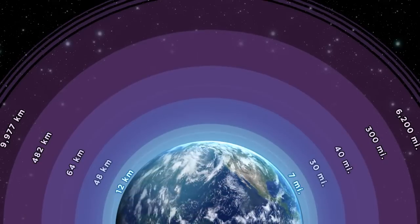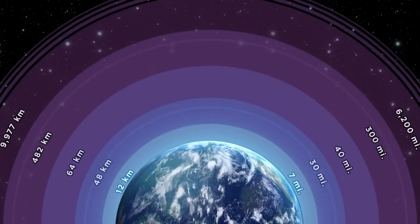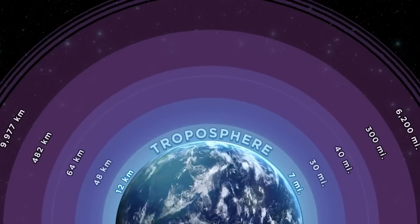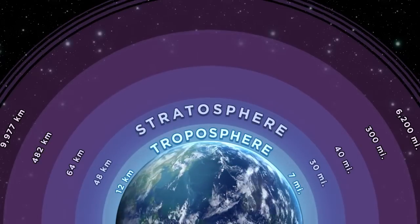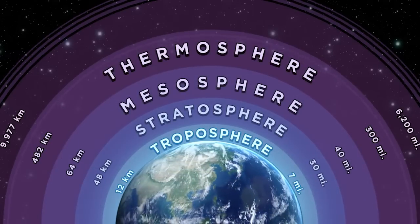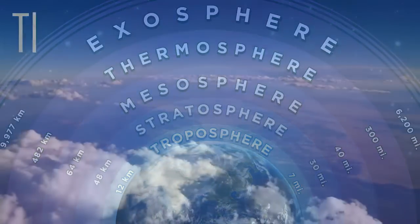The five layers of Earth's atmosphere, starting closest to the ground, are the troposphere, stratosphere, mesosphere, thermosphere, and exosphere.